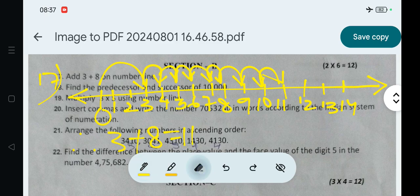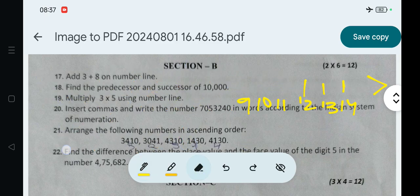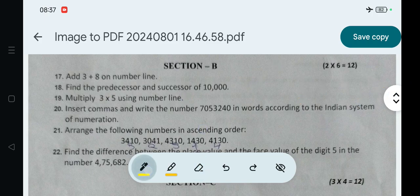Next question, question number 18. The question is: Find the predecessor and successor of 10,000. The predecessor means the previous number and successor means the after number. First, question number 18, then you will mark it.